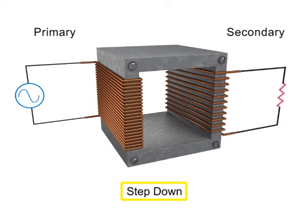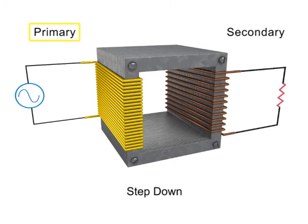In a step down transformer, the number of turns in the primary coil is greater than the number of turns in the secondary coil.